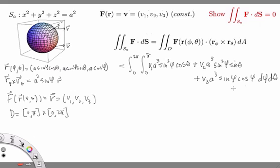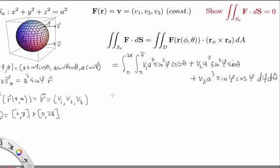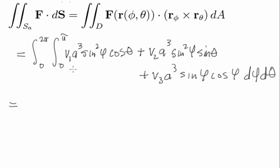Okay, so our method to show that this entire integral is zero is essentially to split it up into three separate integrals using these three terms we have right here and show that each individual integral is equal to zero.